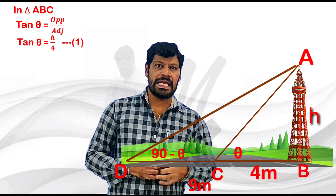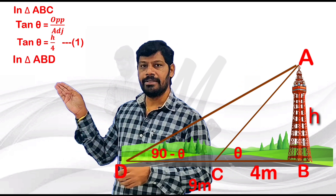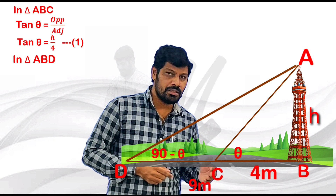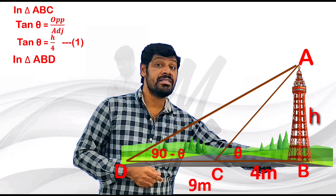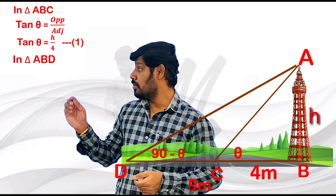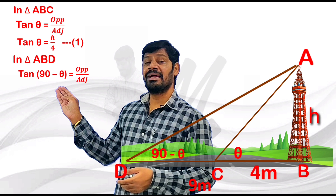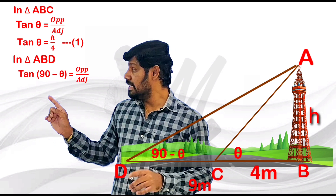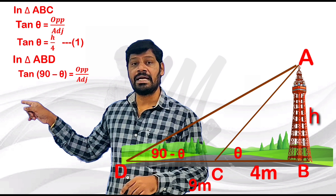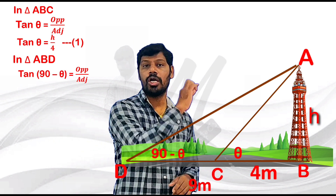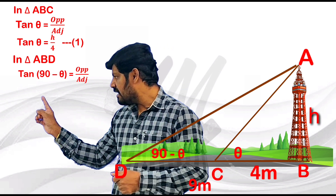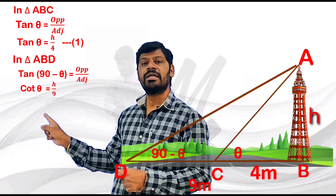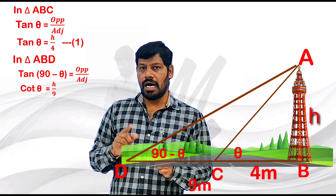Next, triangle ABD. This angle is 90 minus theta. Opposite is H, adjacent is 9. So tan(90 minus theta) equals H by 9. Since tan(90 minus theta) equals cot theta, cot theta equals H by 9.